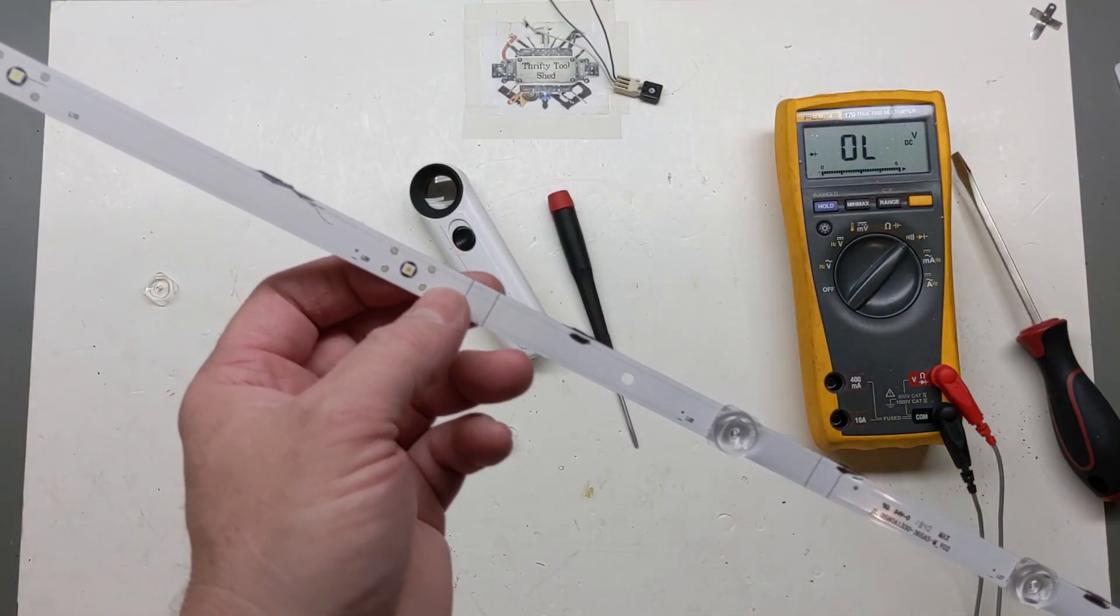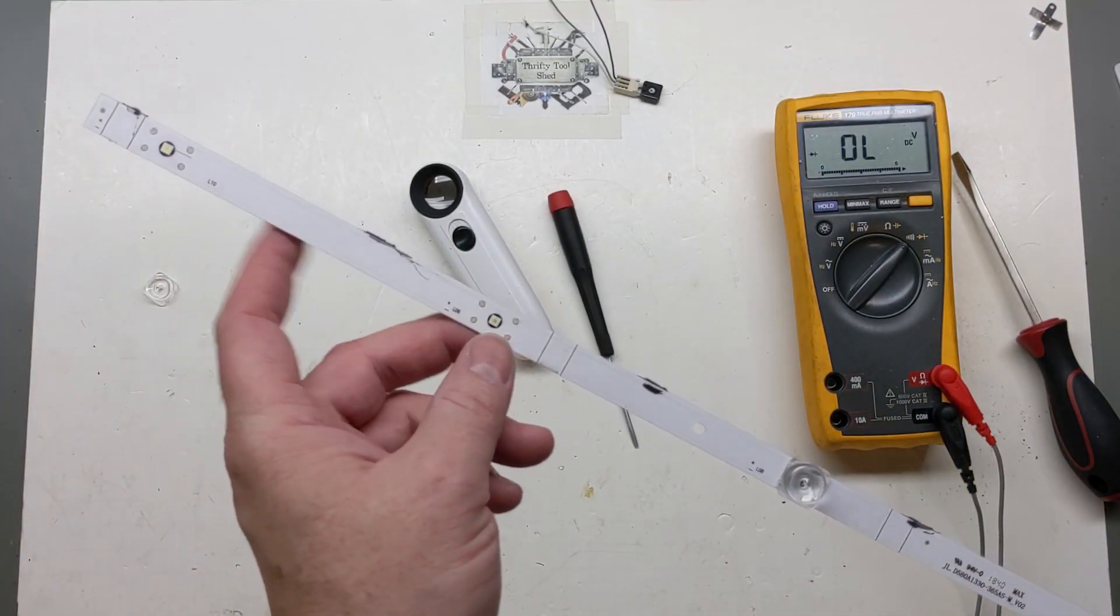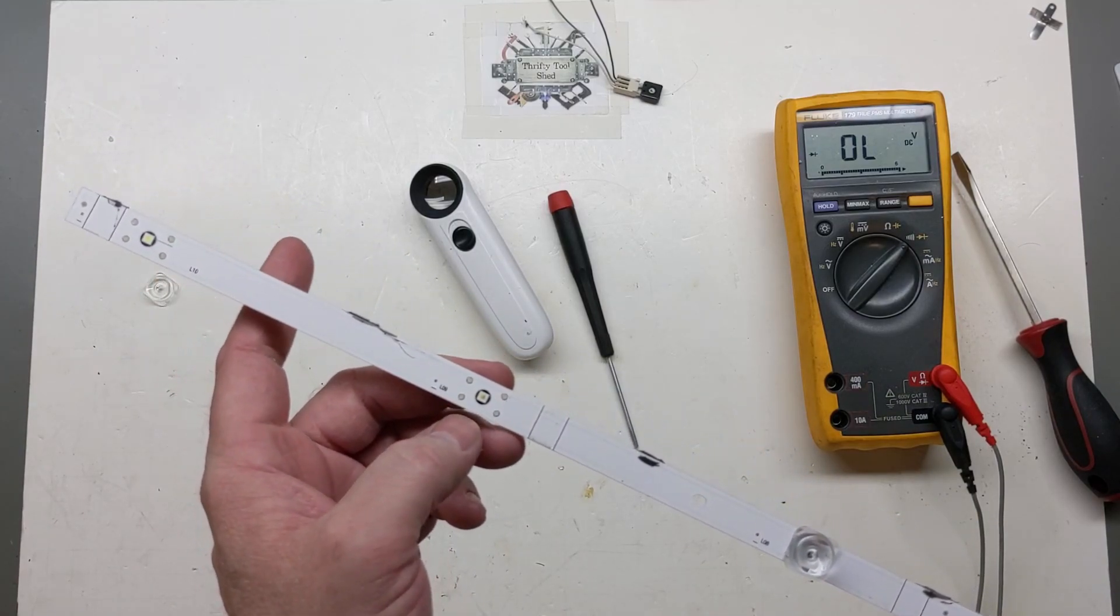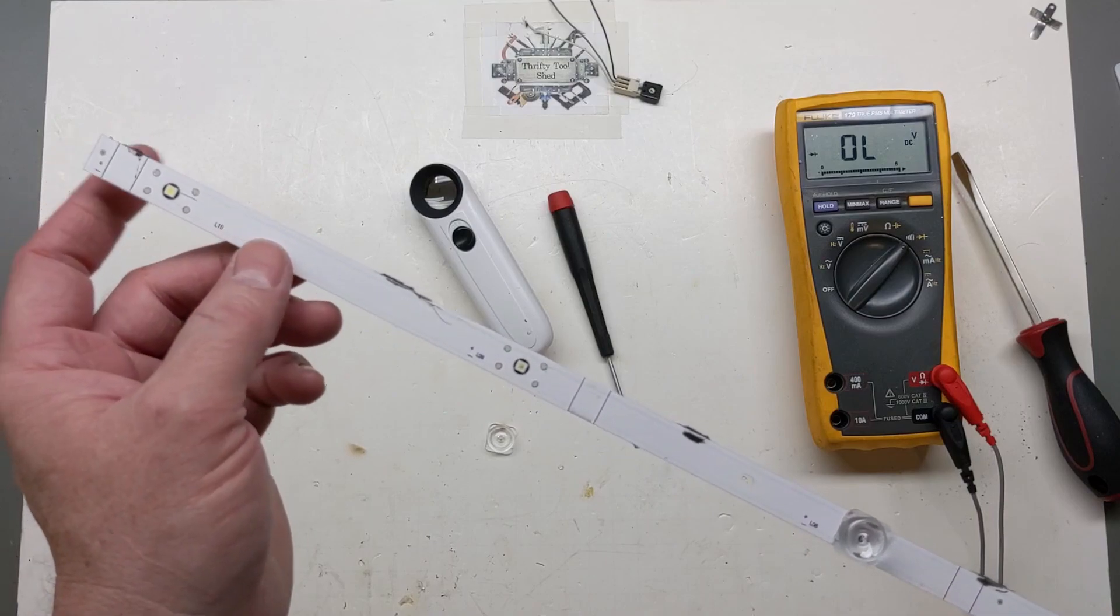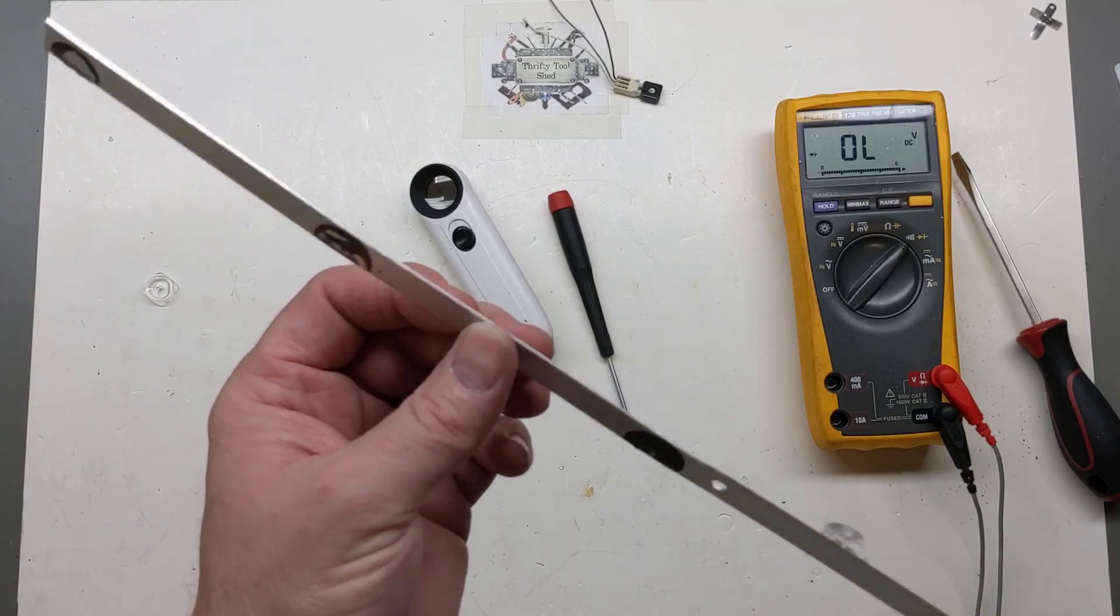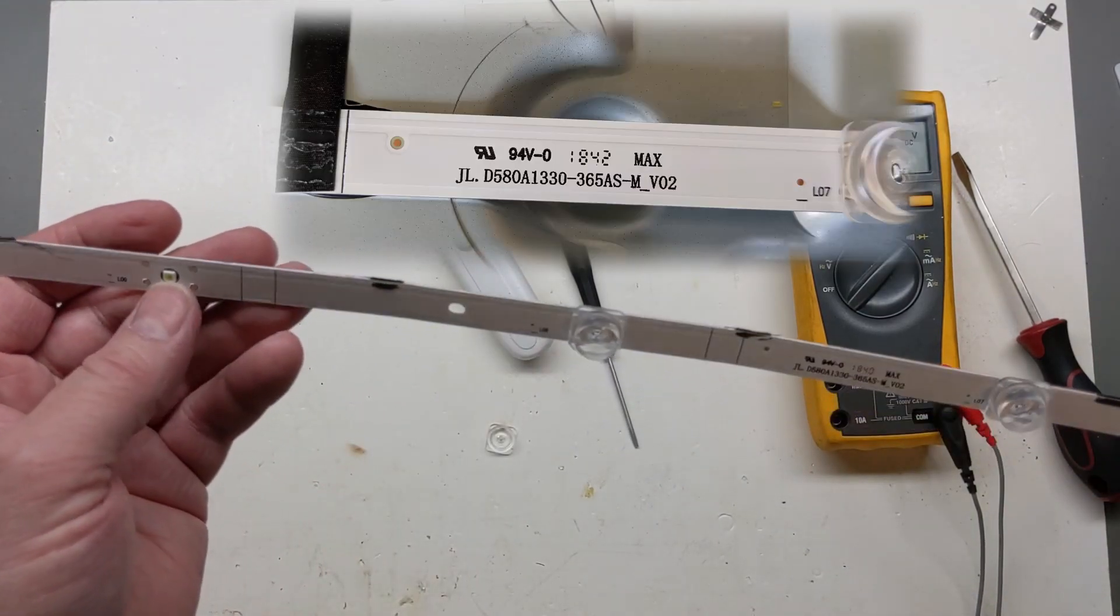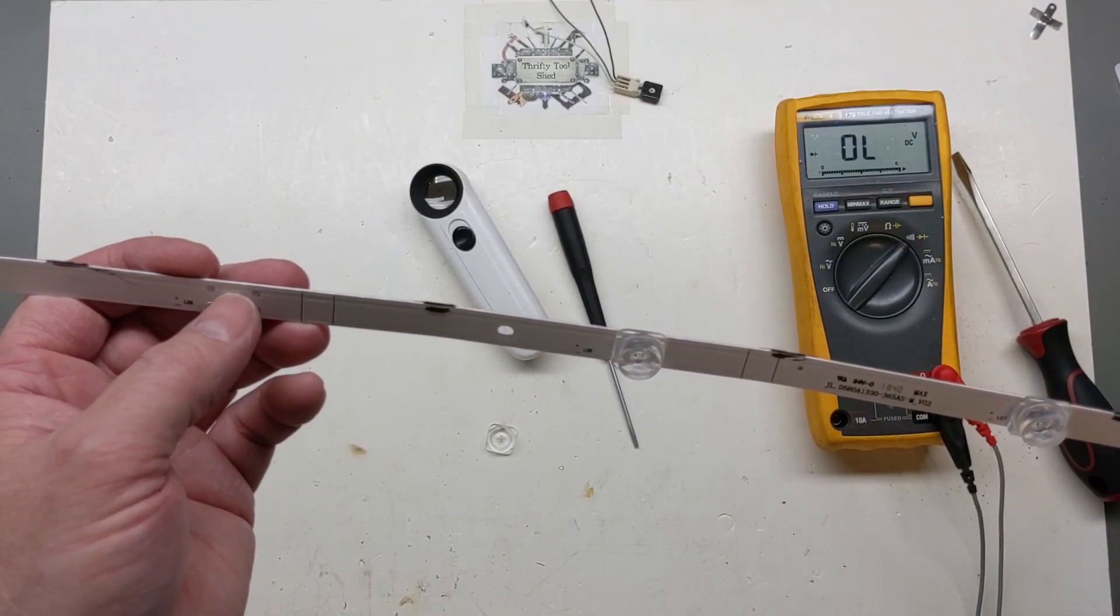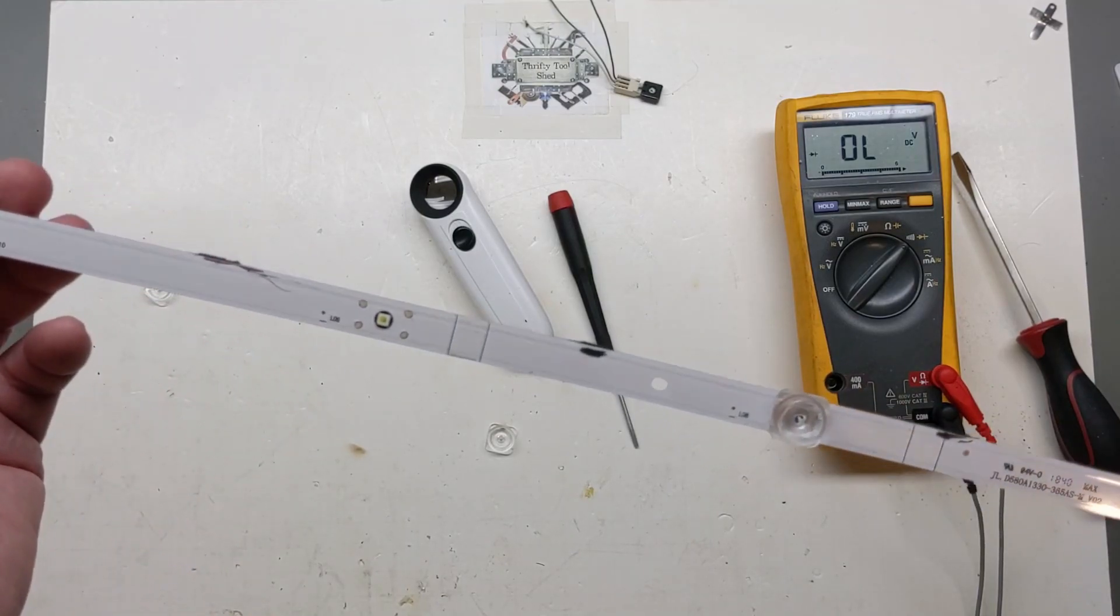So I'm going to go ahead and try to remove these surface mount diodes, these two surface mount LEDs here in the 9 and 10 location. I'm going to try to solder up some new ones on there and just see how this strip works. And I'll decide if I want to actually replace the strips or just replace the SMD LEDs.